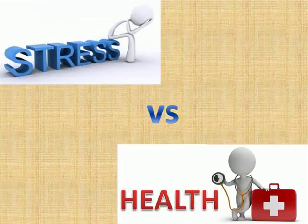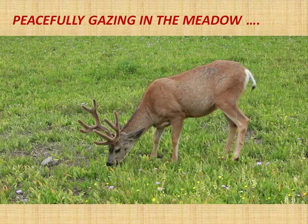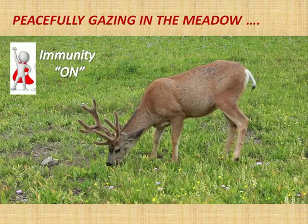Let's say a deer is comfortably standing in a meadow enjoying grass, and let's say this deer has an infection inside it. The immunity system of the deer is busy fighting with this infection. The deer is happily grazing the grass, and the small army — the white blood cells inside the deer — are busy fighting with this infection.